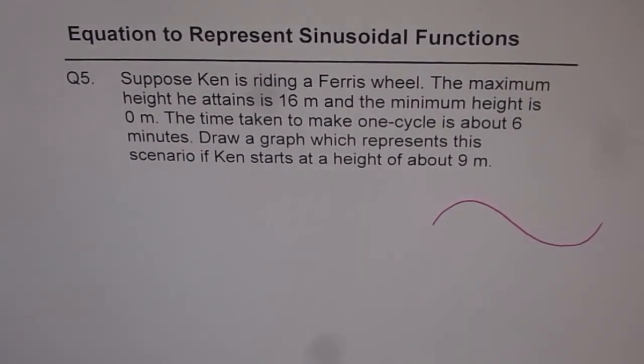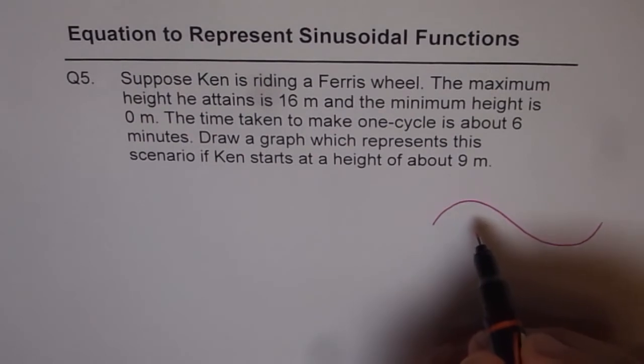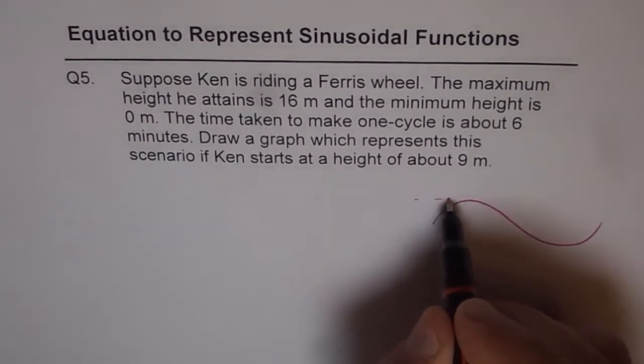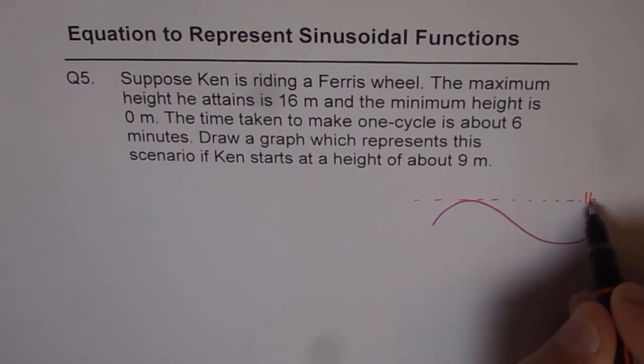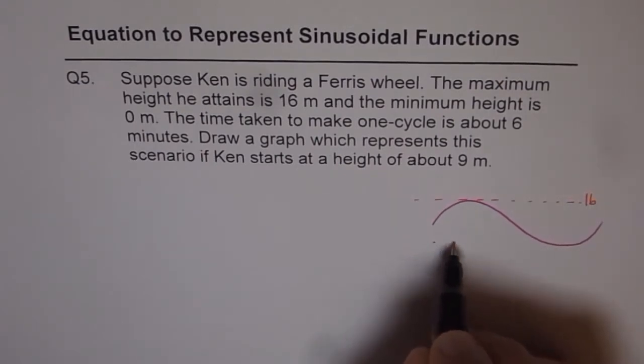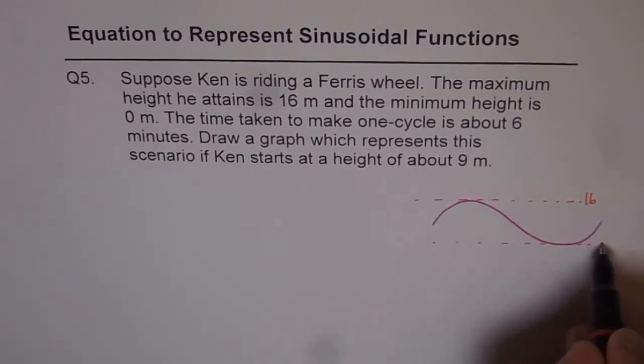Now we are given that the maximum height is 16. So I'll just draw dotted line here saying that this is at 16. And the minimum is given to us as 0. So I'll write 0 here.